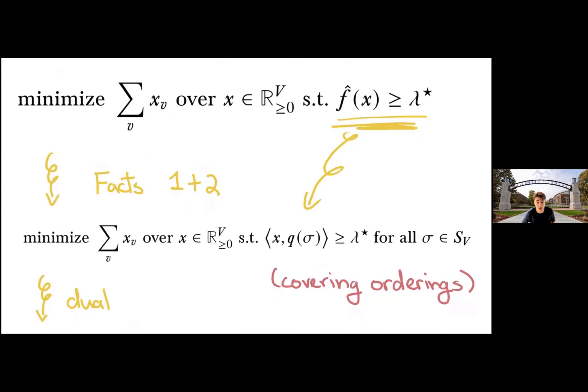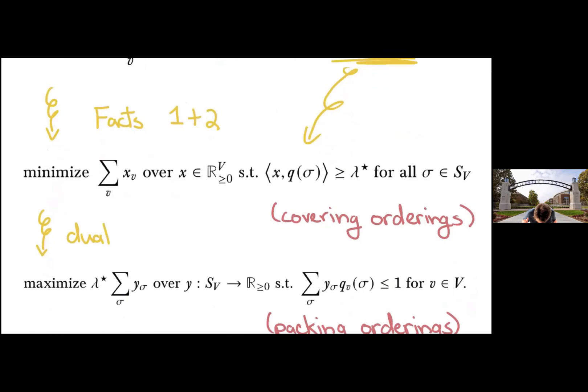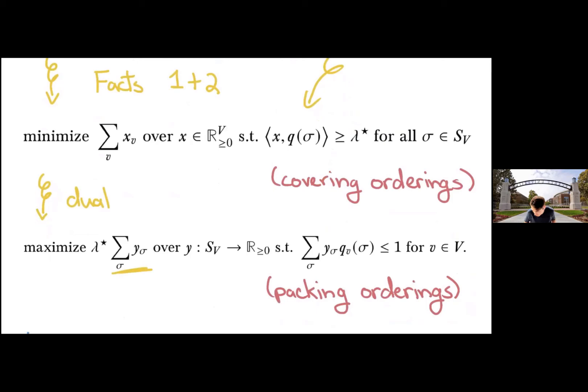So now I've turned this into a pure covering problem. We're covering orderings. We take the dual, we get a pure packing problem. And we're now trying to pack orderings into the vertices. So we have these coefficients y sub sigma, these values, these kind of peeled degrees, so to speak, need to be at most one for every vertex.